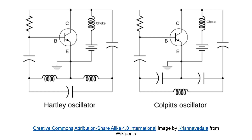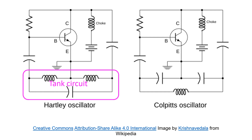Two common classical types of oscillators are the Hartley oscillator, invented in 1915, and the Colpitts oscillator, invented in 1918. The Hartley oscillator has a tank circuit consisting of two inductors connected in series, or a single tapped inductor, and a single capacitor. The signal needed for feedback is taken from the center connection between the two inductors. In the circuit shown, the transistor acts as an amplifier between the high impedance across the entire LC tank circuit and the low-voltage, high-current point between the coils.